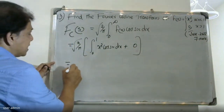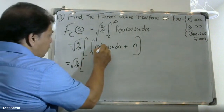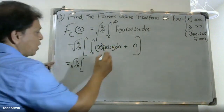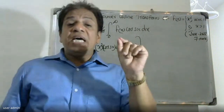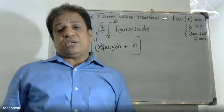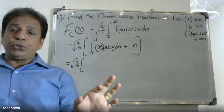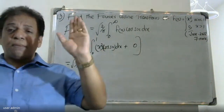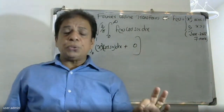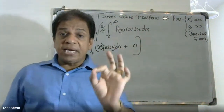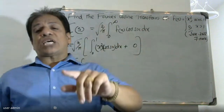This gives us root of 2 divided by pi. If we take x² as the first function and cos(sx) as the second function, we apply the general rule for integration by parts. The general rule is: first function times integral of second, minus derivative of first times integral of second.